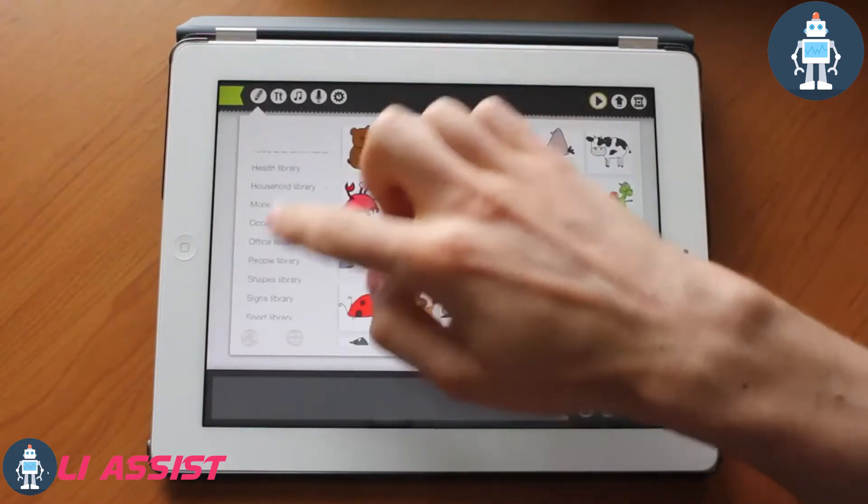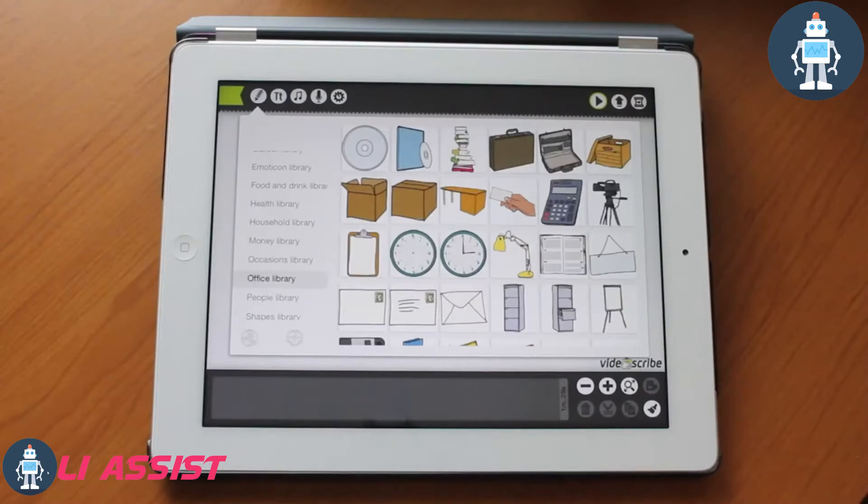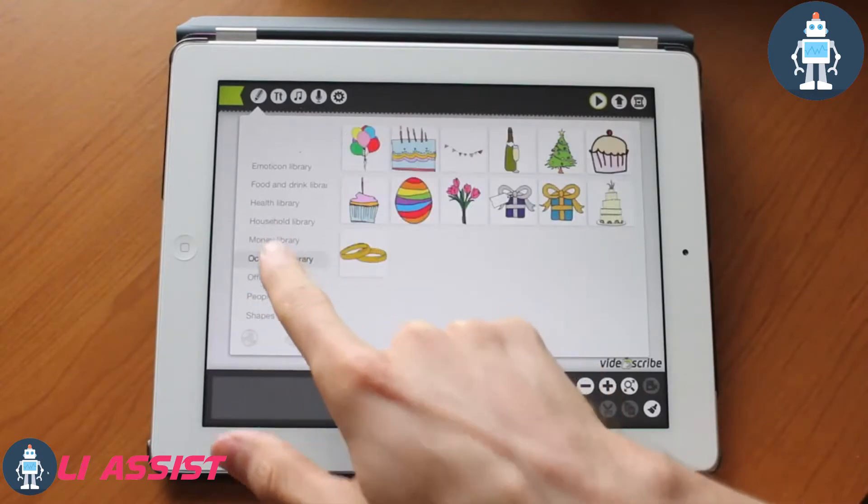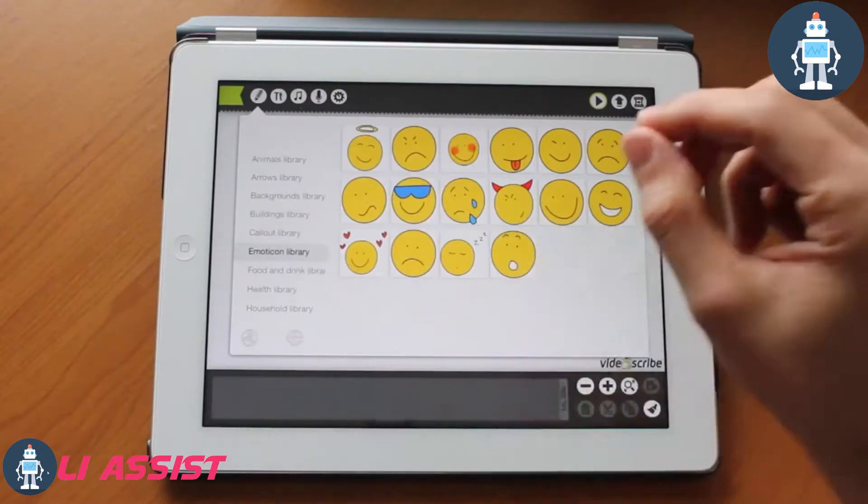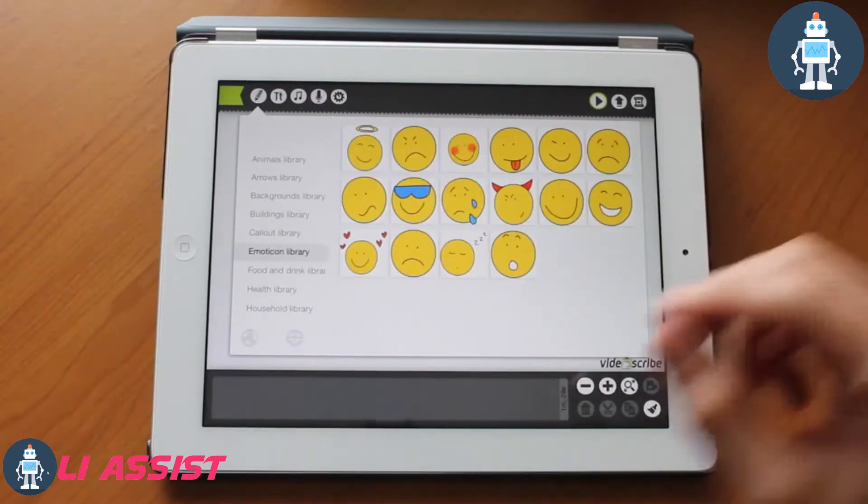There are things like office library, occasions library, money library. There's tons of libraries that you could choose from. The hand that you saw in the video before, that is the hand that will be drawing everything in this library.